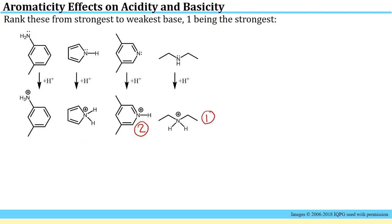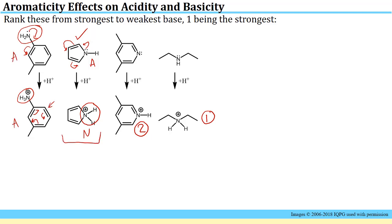Looking back at the first two compounds, each has a lone pair involved in resonance. However, the lone pair on pyrrole is necessary for aromaticity. If you protonate it, you go from an aromatic species to a non-aromatic one, losing a large amount of stability. Protonating the carboxymide nitrogen doesn't destroy aromaticity, only some resonance stabilization. Since losing aromaticity is far more destabilizing, pyrrole will be the weakest base and the carboxymide nitrogen will be the third strongest.